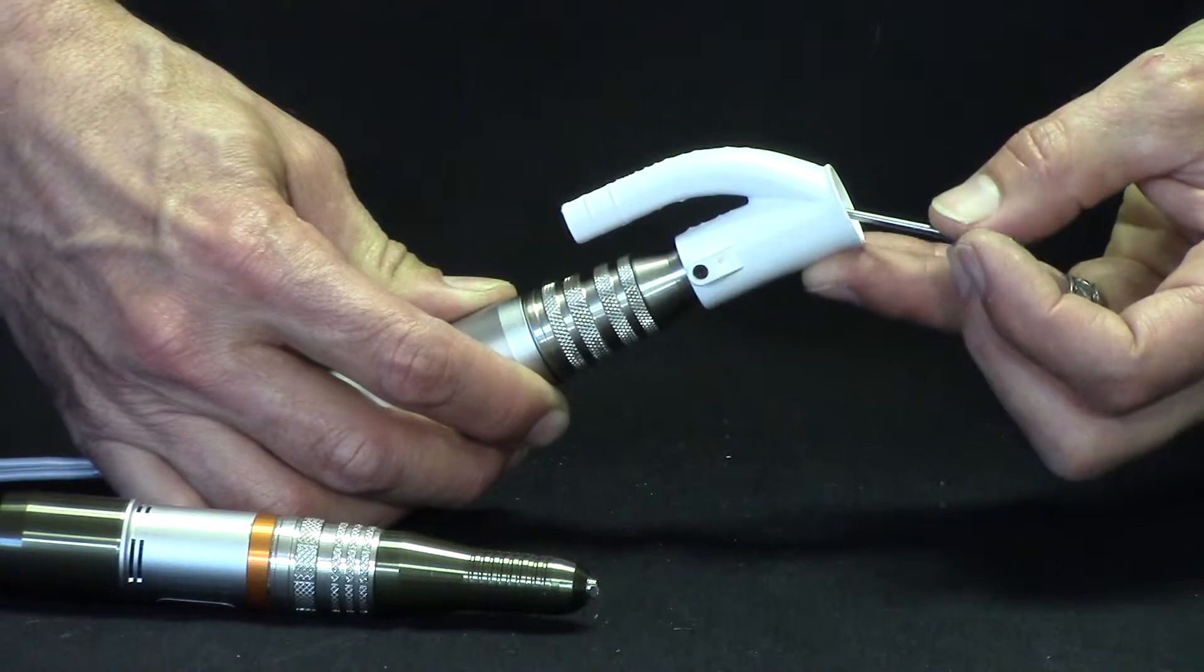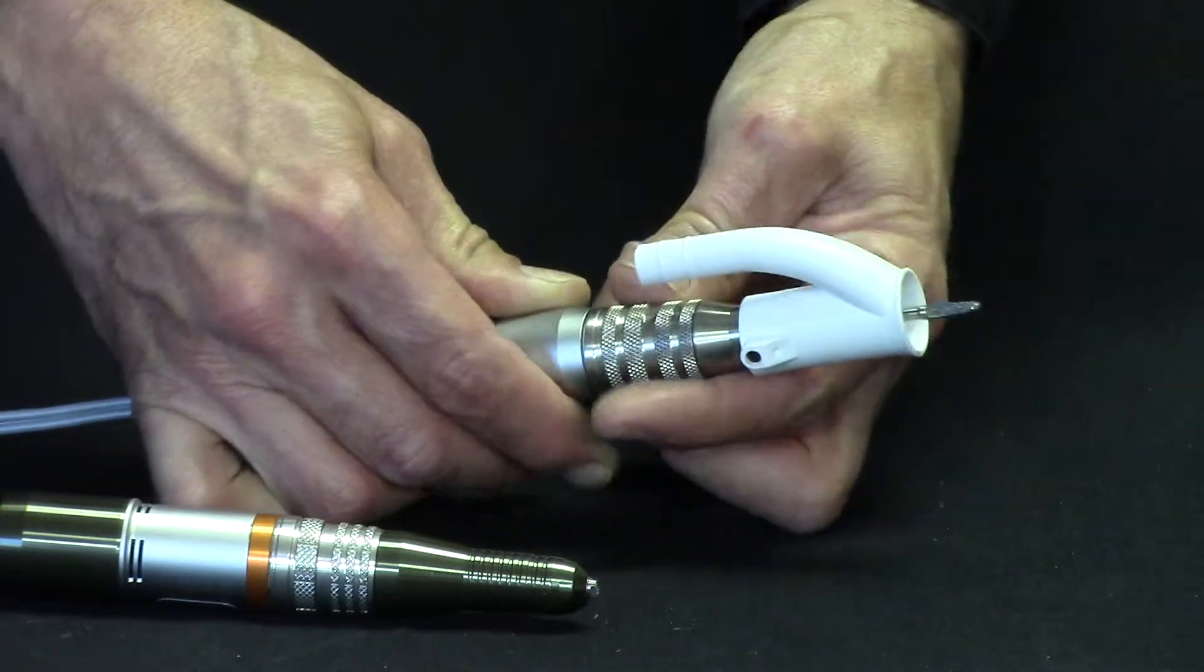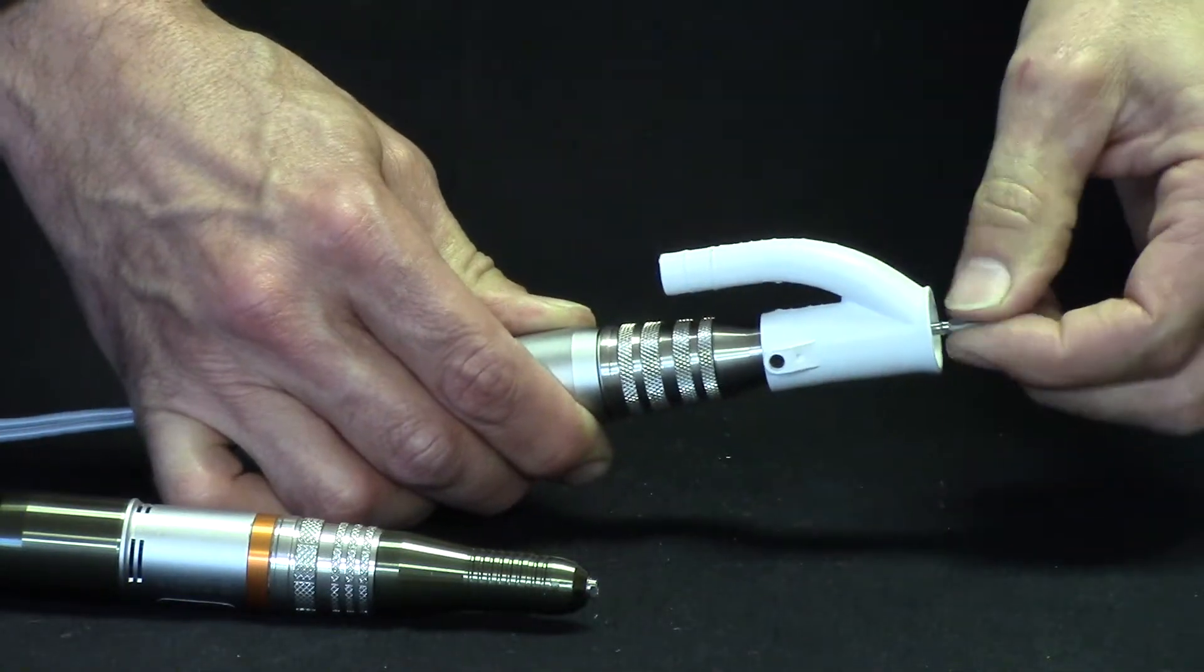Install your new burr, rotate the twist ring back, and now your burr is locked in.